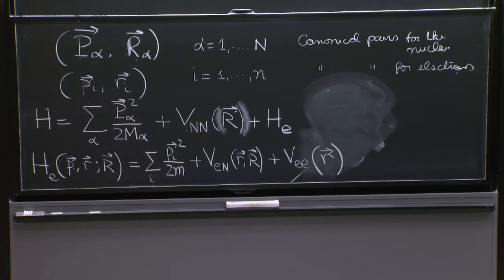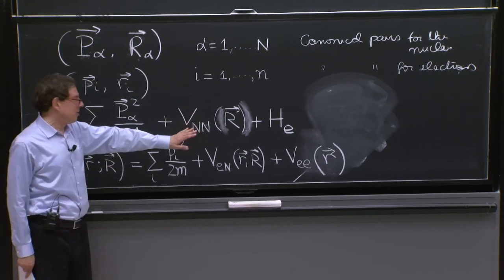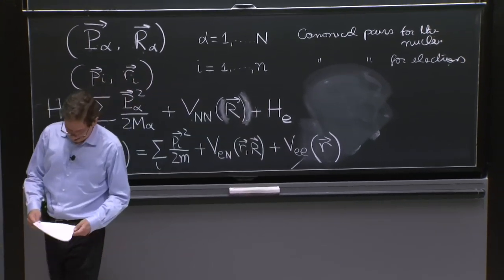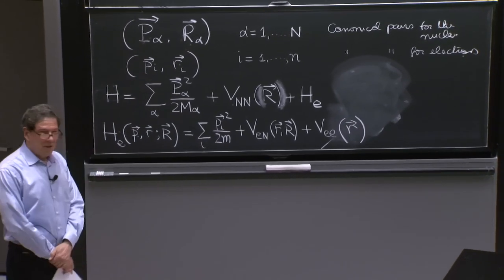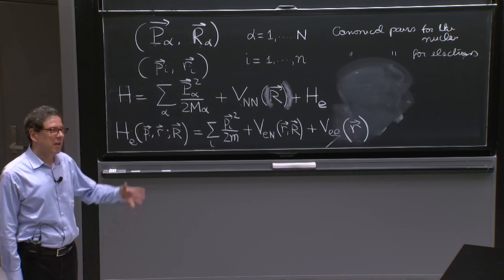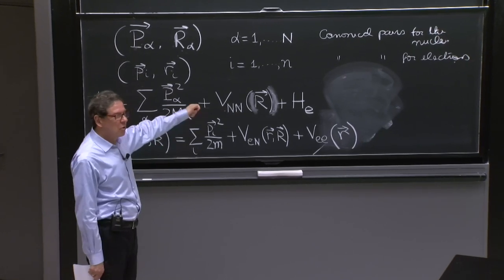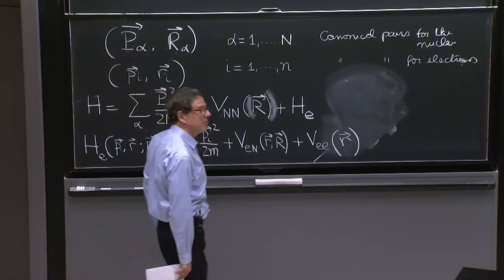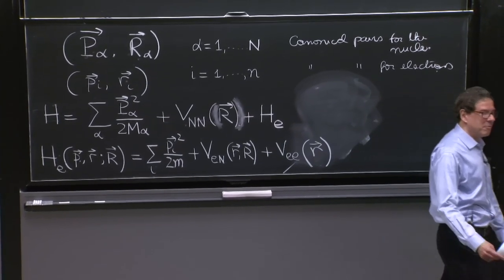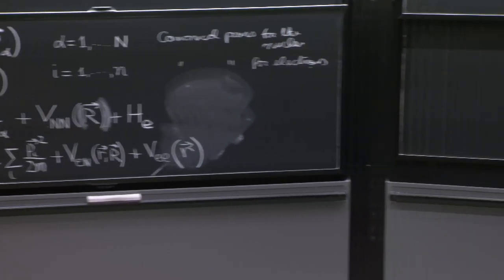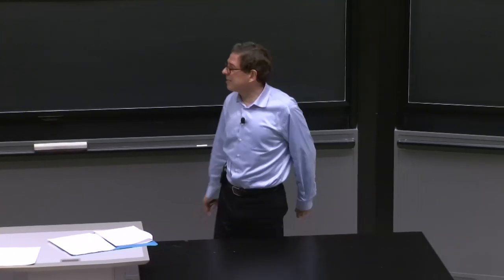All these potentials are Coulomb potentials: nucleus-nucleus, nucleus-electron, electron-electron. So the Hamiltonian is written. If you have three nuclei and five electrons you could write all the equations — and you could dream of putting it into a computer and it will tell you what the molecule is. That's roughly true, but even for a good computer nowadays this is difficult, so you have to think about how to simplify the problem.